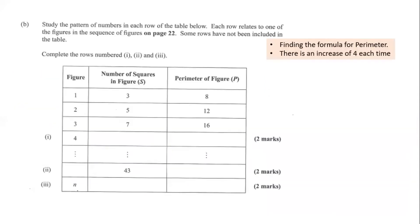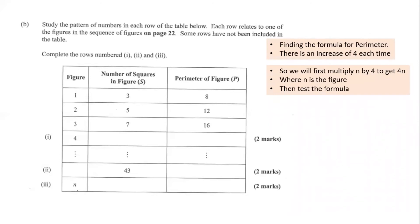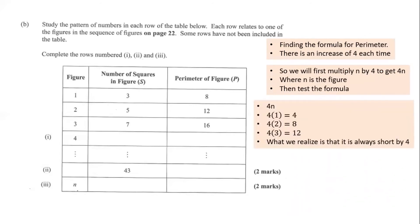Now to find the formula for the perimeter. There's an increase of 4 each time: 8 to 12 is a difference of 4, and 12 to 16 is a difference of 4. So we multiply n by 4 and test. 4×1=4, 4×2=8, 4×3=12. If it works, great; if not, something additional must be done.